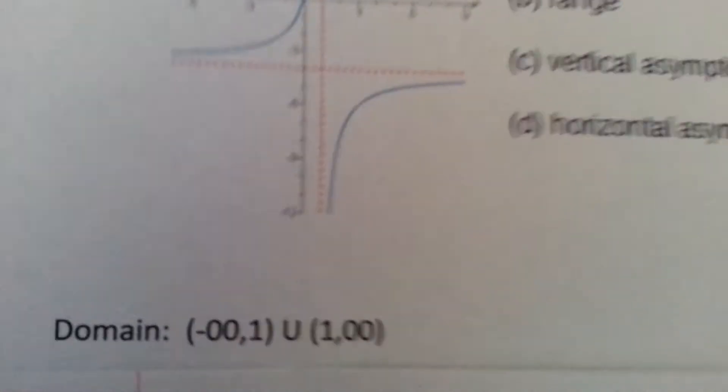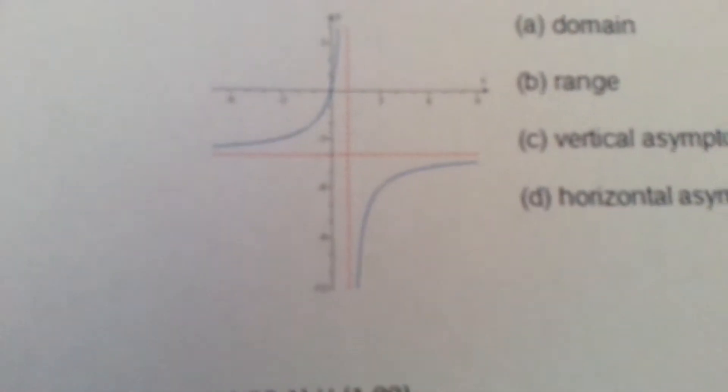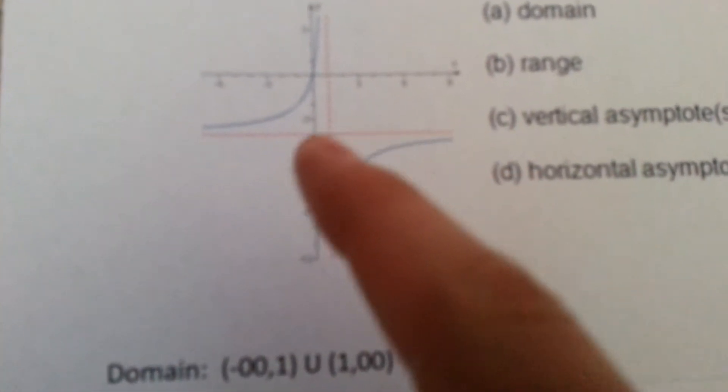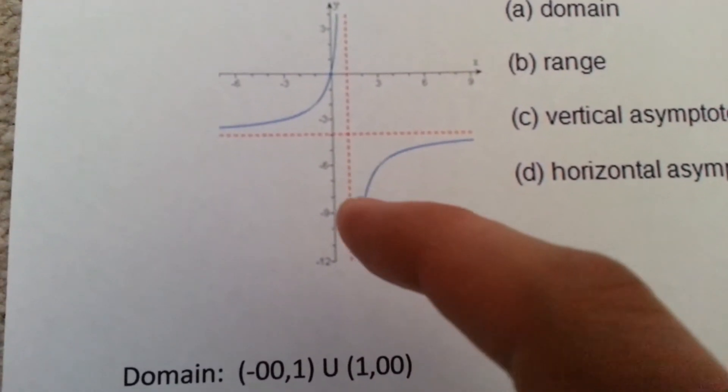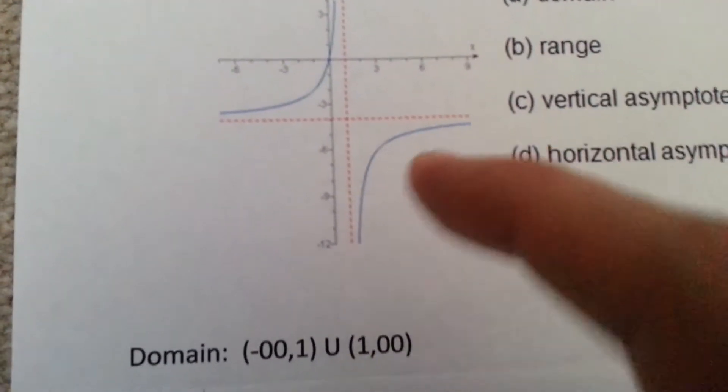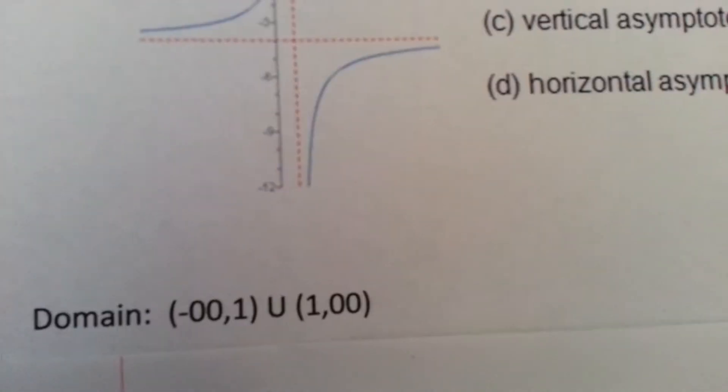The domain is along the x-axis. As you see in the picture, the domain is negative infinity to 1, then it stops and starts back off and goes 1 to infinity. That's where I got negative infinity, 1, union 1 to infinity.